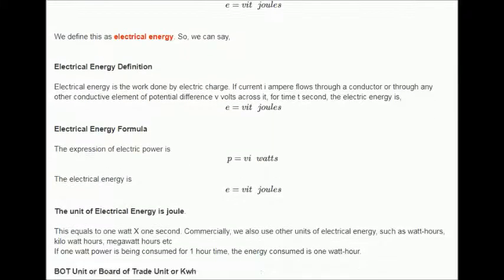The unit of electrical energy is joule. This equals to 1 watt times 1 second. Commercially, we also use other units of electrical energy, such as watt-hours, kilowatt-hours, megawatt-hours etc.